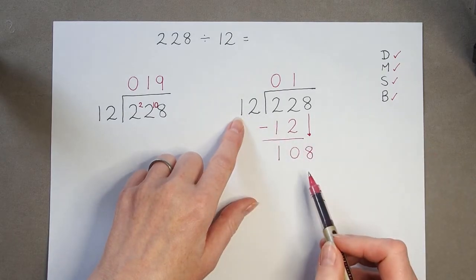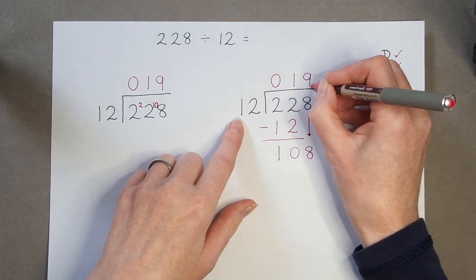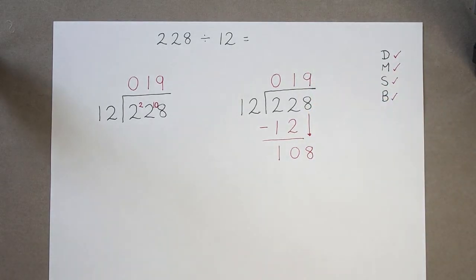108, it's here, divided by 12, is 9. And we still go back and write our answer in at the top. There's no remainder, so our calculation is finished.